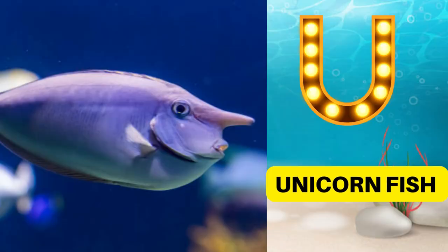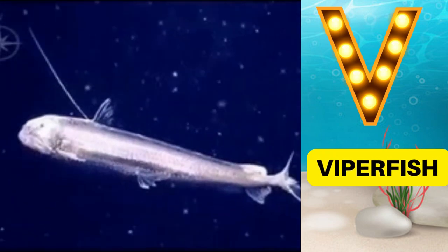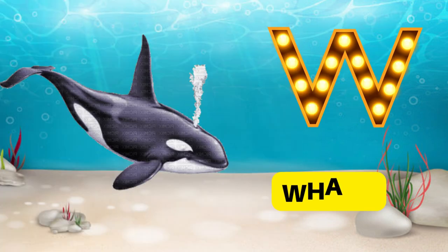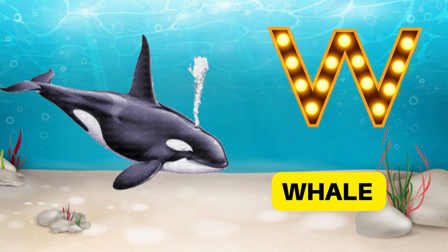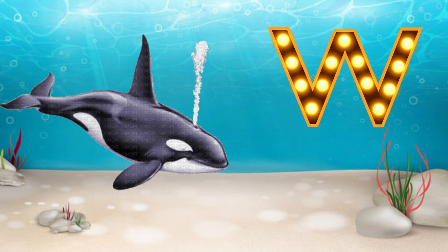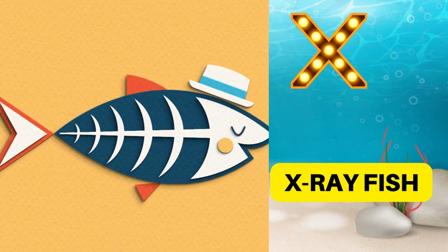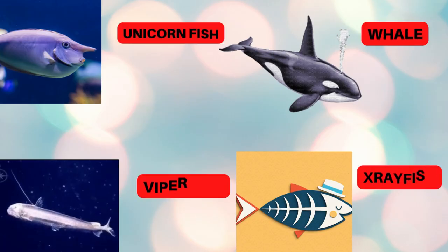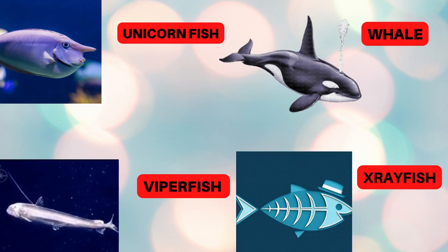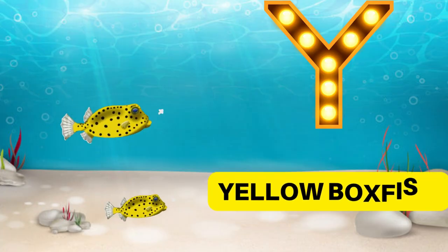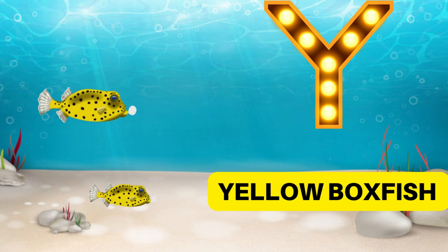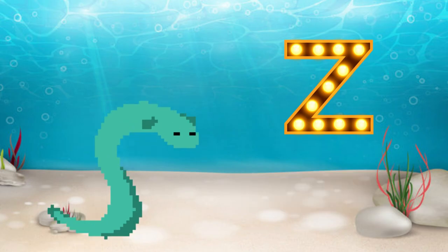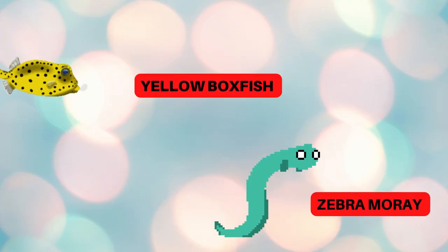U is for unicornfish. Unicornfish. V is for viperfish. V viperfish. W is for whale. Wuh wuh whale. X is for x-ray fish. X-ray fish. Y is for yellow box. Yuh yuh yellow box. Z is for zebra mooring. Z z ze zebra mooring.